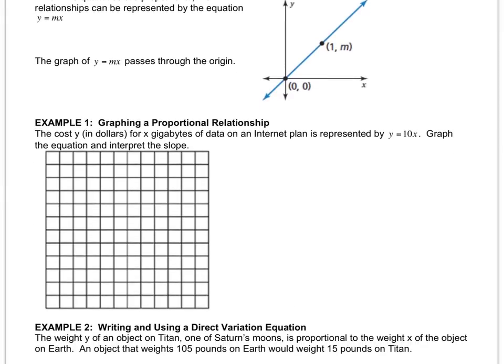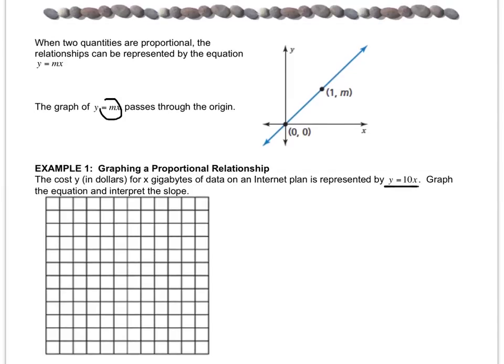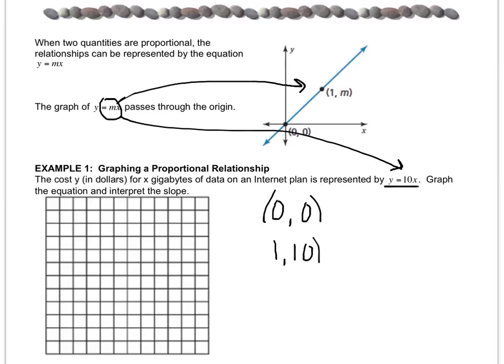Let's look at example one. The cost in dollars for x gigabytes of data on an internet plan is represented by y equals 10x. Graph the equation and interpret the slope. In the equation y equals mx, m is the y value of the point that it goes through. If in this case m is 10, then there are two points that I know on this line. One is the point zero zero and the other is the point one ten, because I looked up here and m was 10, so I used one comma ten.